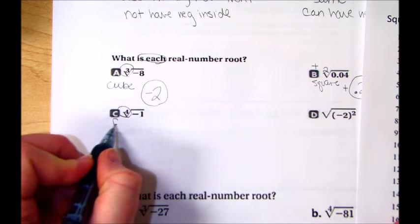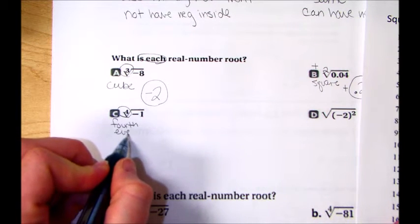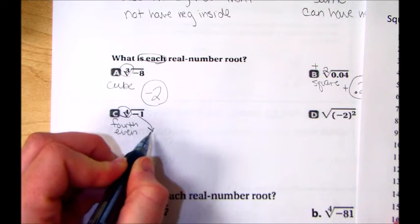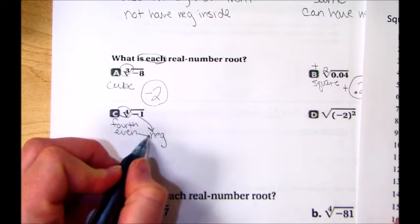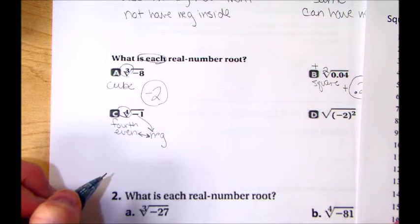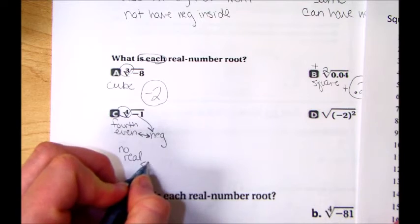Part C. We have a fourth root. Now a fourth root is even. Do you see this negative inside? That's no good. We can't have a negative and an even. The negative can't be inside. So we write no real solutions.